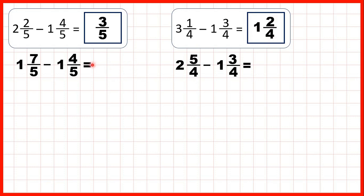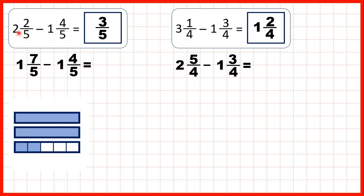And we can show fraction bars to see what we did here. So we started with 2 and 2 fifths — that's 2 wholes and 2 fifths. But when we looked at what we were subtracting, we saw that we needed to take 4 fifths away. So we exchanged one of our wholes for 5 more fifths. That gave us 1 and 7 fifths. So then we could take away 1, 2, 3, 4 of those fifths to leave 3 fifths.